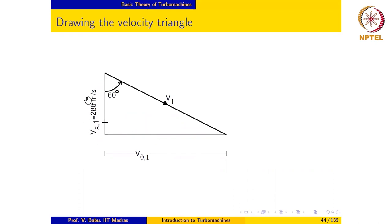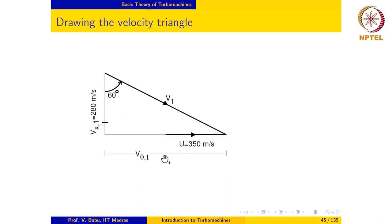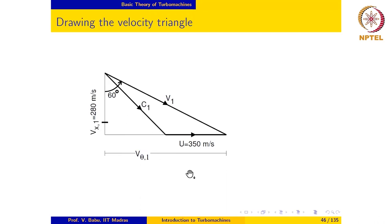The axial velocity is given to be 280 meters per second. Note that this diagram is not to scale but is qualitatively accurate. The blade speed is also given, so we can draw the blade velocity vector. Blade speed is given to be 350 meters per second. Notice that Vθ1 and U are in the same direction, and that is the basis for this choice of direction for the blade speed. The relative velocity vector at inlet now points from here to here, and we complete the inlet velocity triangle.